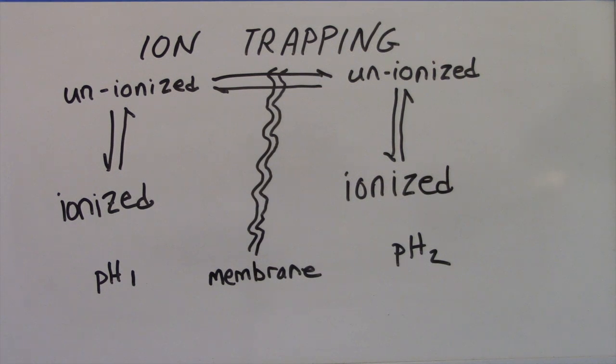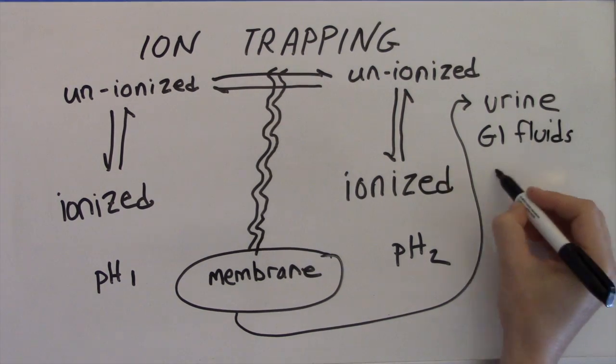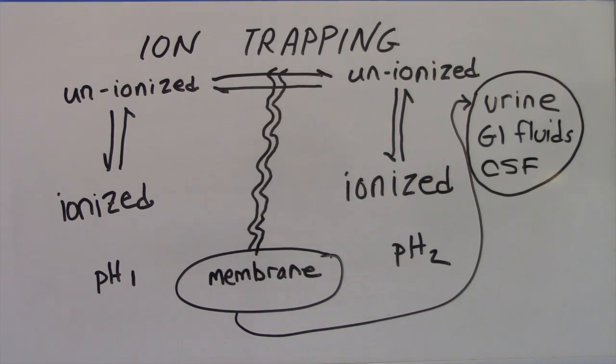Ions get trapped in places where there are multiple layers of cells and membranes that enclose a fluid, in places where they can't go through spaces between cells, like they do in the continuous capillaries that are in most of the body. So they can get trapped in places like the urine or the gastrointestinal contents or the cerebrospinal fluid.